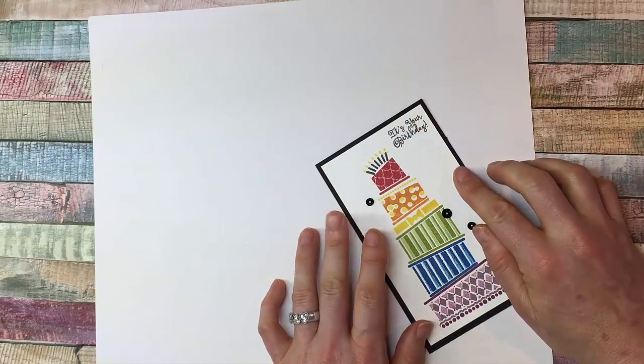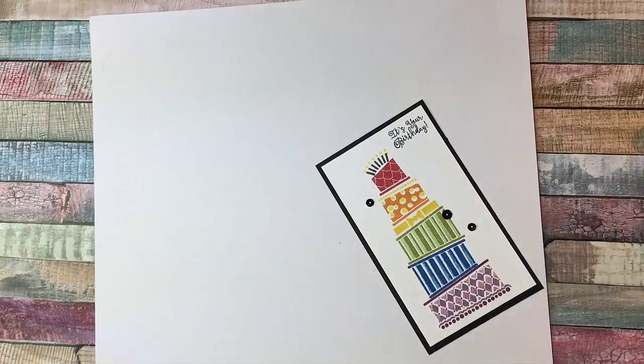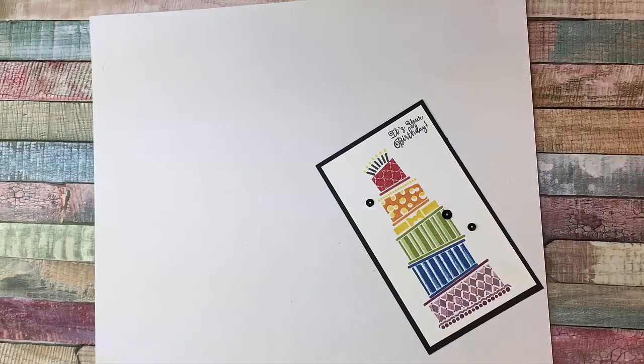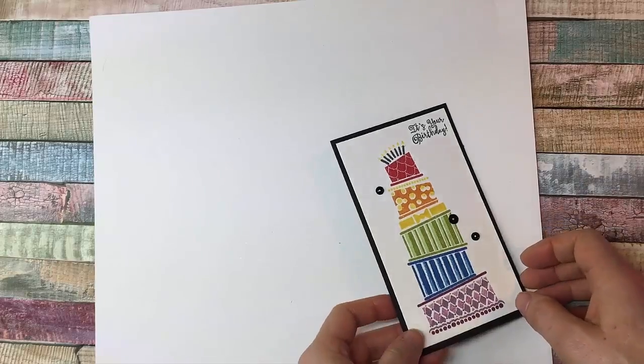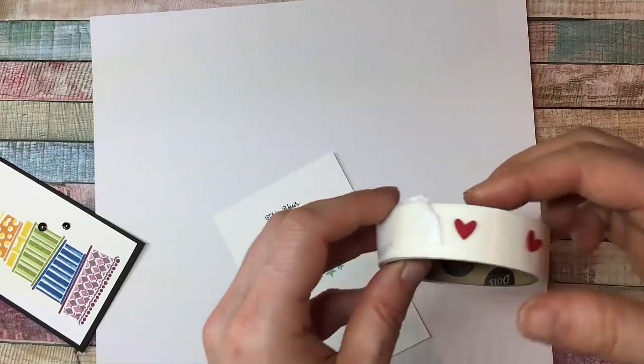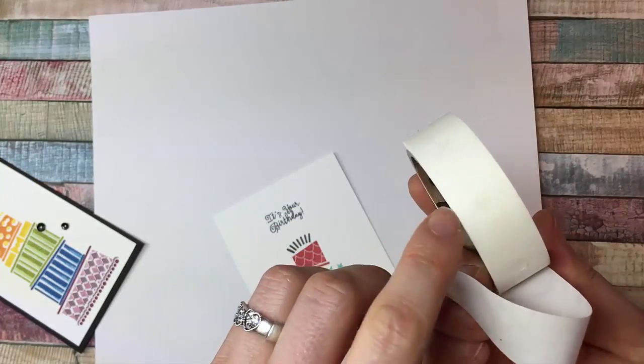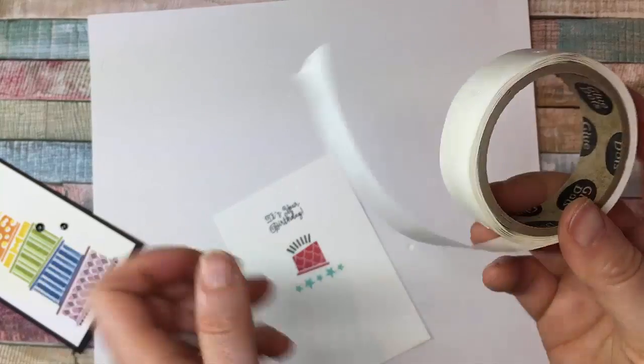There you go. And the advantage to this one is, unlike tape, because it's liquid, you've got a few moments where you can adjust anything should you need to. Okay. Then our last thing I want to show you are glue dots. So this comes in a roll, and maybe you can see there's little dots of very sticky glue.